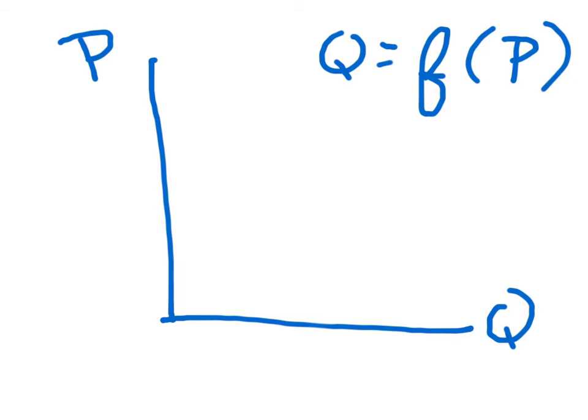However, you would expect then to have the price, which is the cause variable, would normally appear on the independent variable, the x-axis, the horizontal axis, and the effect variable of the quantity would appear on the y-axis, the vertical or the usual dependent variable. Here, they are reversed.